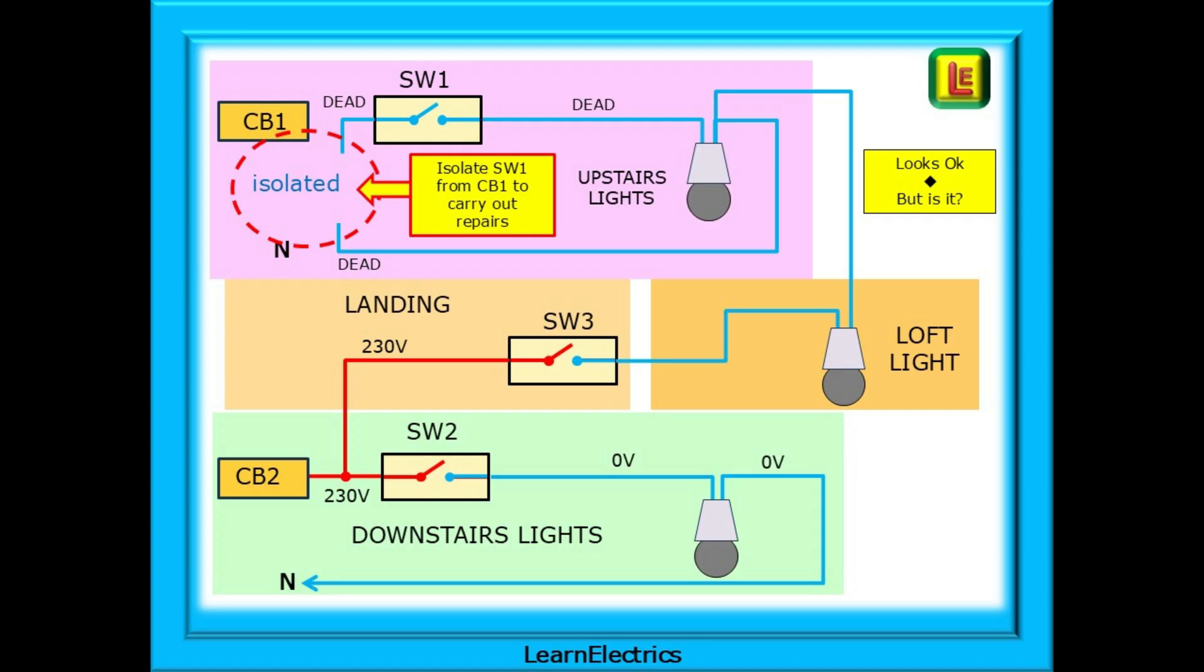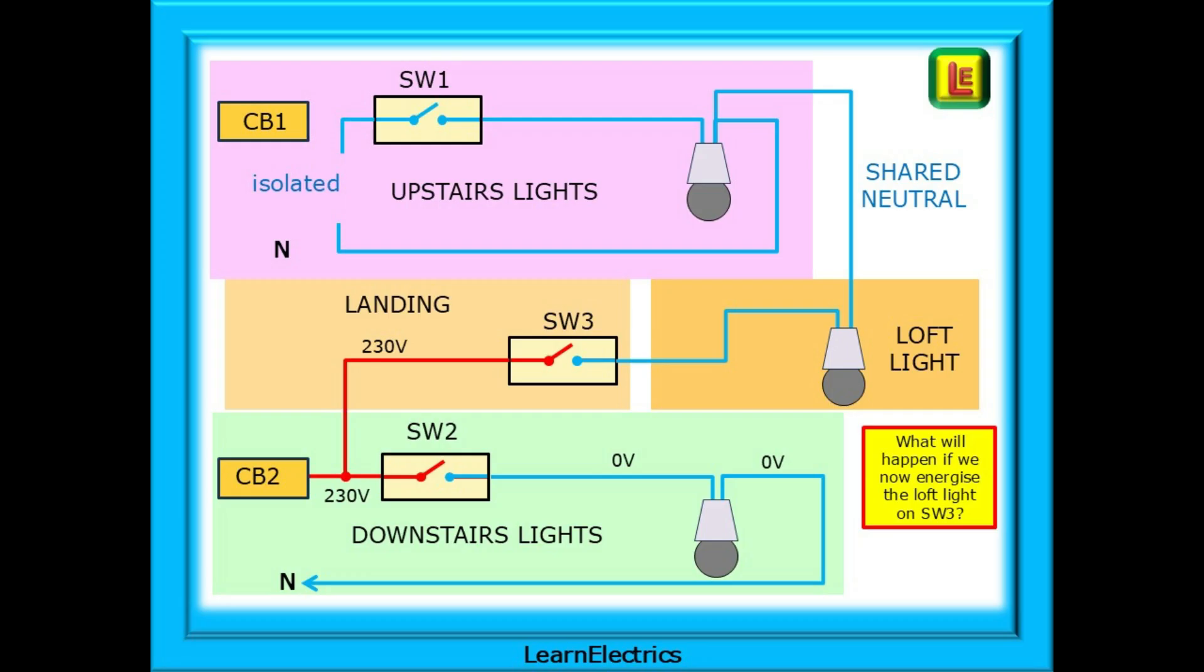Now move on a year or two and we need to carry out some work on the upstairs lighting. We isolate the circuit to SW1 by removing the line conductor from the circuit breaker number 1 and the neutral conductor from the earth bar. Now we can start work. It all looks OK. But is it? What will happen if we, or someone else, now energises the loft light on SW3? What influence on our safety will the shared neutral have? Are we going to be safe working on the upstairs lighting, unaware of this shared neutral?